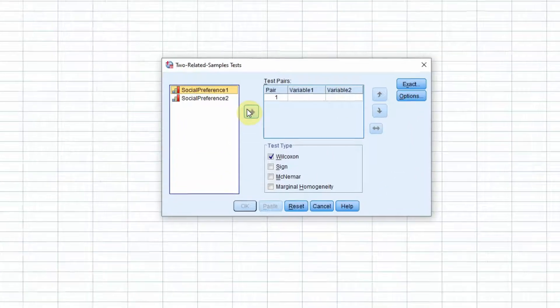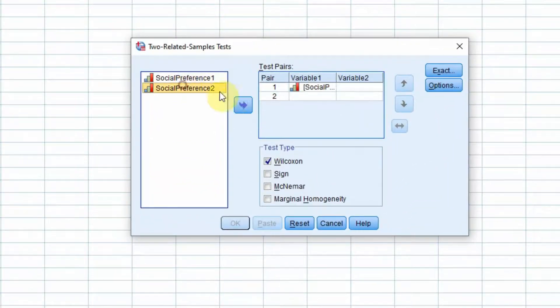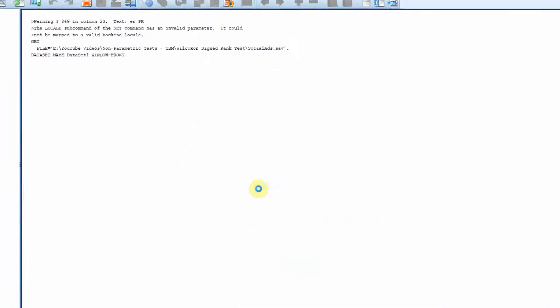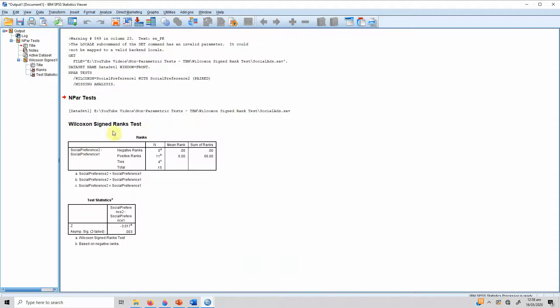Social media preference 1 is our variable 1, social preference 2 is our variable 2, and Wilcoxon is already selected. We press OK. Now here are our results.